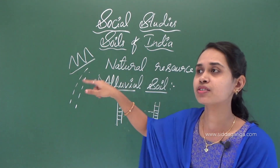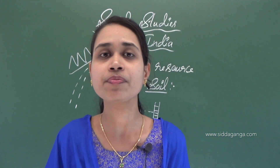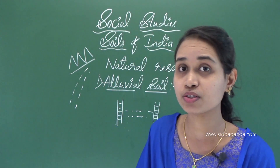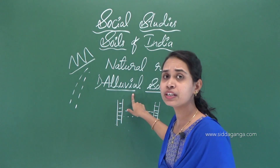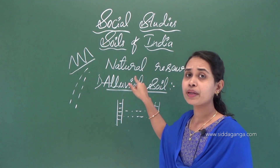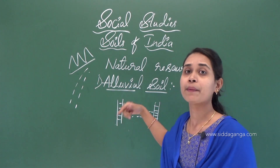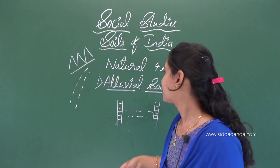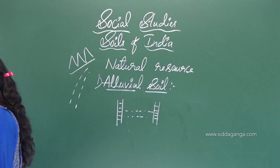The crops grown in alluvial soil regions include paddy, wheat, maize, sugarcane, pulses, oilseeds, vegetables, tobacco, cotton, and jute. Because it is naturally fertile soil, farmers can grow many crops without needing to add manure.